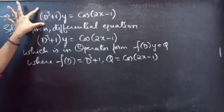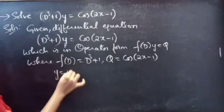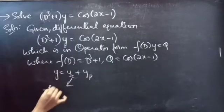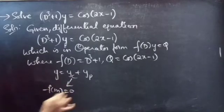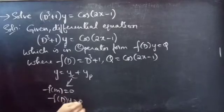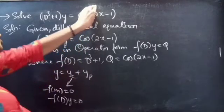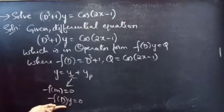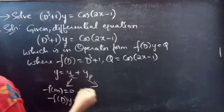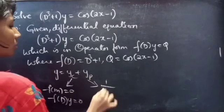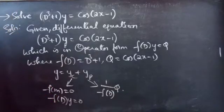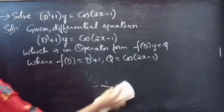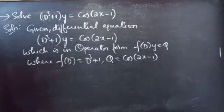We need to find the general solution, which is given by y = yc + yp. Here yc is the complementary function. We get yc using the roots of the auxiliary equation of the homogeneous equation. Simply by taking RHS to 0, we get f(D)·y = 0. We find yp using (1/f(D))·Q.